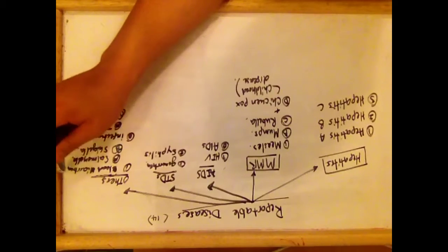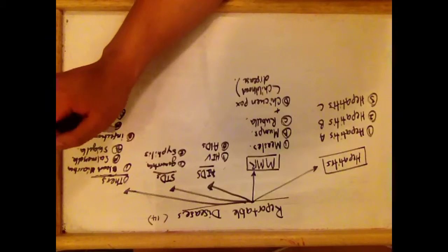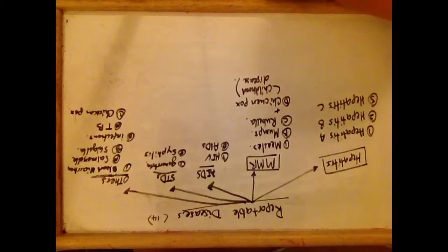Others, which include bloody diarrhea and infectious. Bloody diarrhea could be Salmonella and Shigella. Infectious TB, very, very infectious disease.